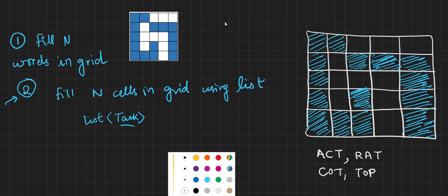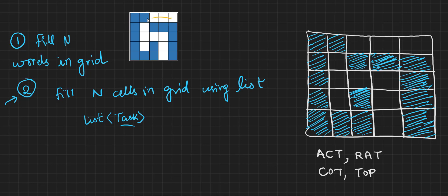A task is defined by a starting position and a direction. For example, starting at row 0, column 2 going horizontal is one task. We manually collect all tasks: 0,2 horizontal; 1,1 vertical; 2,1 horizontal; and 2,3 vertical. This task list defines the work to be done. Earlier n was the word list size; here n is the task list size. Ideally they are the same, but there is a big difference in the two approaches.